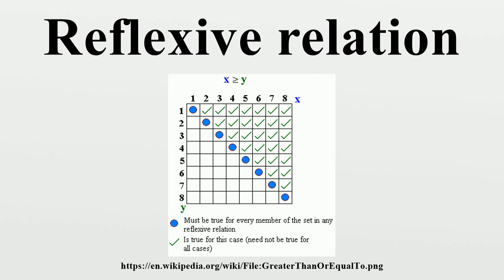For example, the binary relation 'the product of X and Y is even' is reflexive on the set of even numbers, irreflexive on the set of odd numbers, and neither reflexive nor irreflexive on the set of natural numbers.